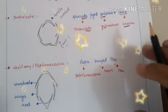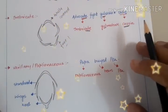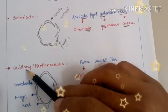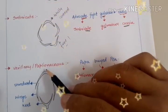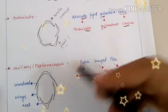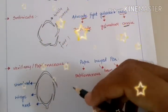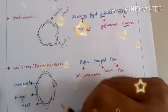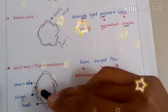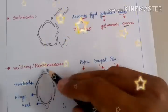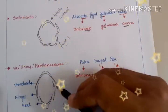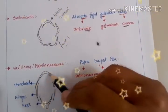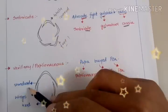The next is a very special and important kind of Estivation — Vexillary, also known as Papilionaceous. In this Estivation we have five petals or sepals, in which the largest one is covering all the other petals or sepals. That particular large one is known as the Standard.